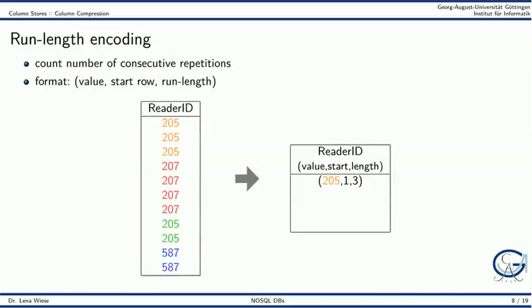The first option is run length encoding. The run length counts the number of consecutive repetitions of the same value. We can store a column as a triple, where each triple consists of the value itself, the starting row, and the run length.